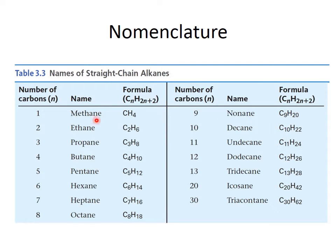To name an alkane you just number the carbons. So for four carbons, that's 'but', and then we add the 'ane' ending — butane. These are all straight chain alkanes, so they all have just the number-of-carbons prefix plus the 'ane' ending. One thing to note is that the formula for any alkane is CnH2n+2. The number of hydrogens is always two times the number of carbons plus two, and this holds for both straight chain and branched chain alkanes.